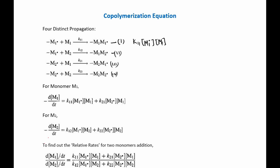We can clearly say that the rate of change of monomer 1 is the summation of the rate of propagation of equation 1 and equation 3, because in both cases we are converting monomer 1 to the polymer by adding monomer 1 to either M2 radical or M1 radical. Similarly, the rate of concentration change of monomer 2 will be the summation of the rate of propagation of equation 2 and equation 4.